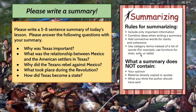Now I would like you to write a summary, as I always ask you to do. This should be a lengthy summary — instead of three to five sentences, this one should be five to eight sentences. Try to answer the following questions: Why was Texas important? What was the relationship between Mexico and the American settlers in Texas? Why did the Texans rebel against Mexico? What took place during the revolution? And how did Texas become a state? If your summary answers all of those questions, chances are you're going to have a good summary. On the right, there's a blurb showing you what a good summary does and does not look like.